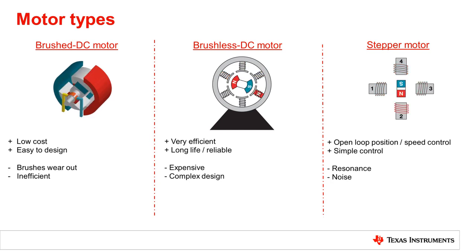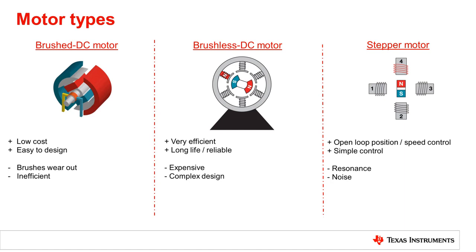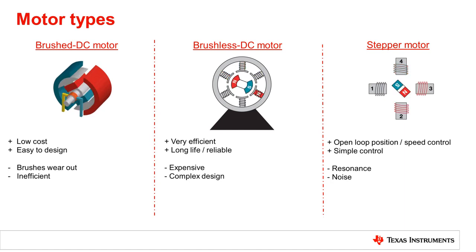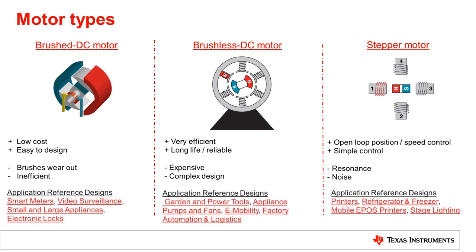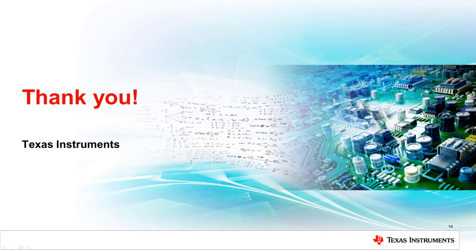With stepper motors, we can use open-loop architecture for speed and position control with no sensors needed, making designing with stepper motors easier compared to brushless DC systems. However, since the current in stepper motors needs to be controlled in order to avoid noise, vibration, and resonance, current regulation is often needed. We recommend taking a look at TI's application reference designs listed here for each motor type. These tools provide a quick and easy way to see how our motor applications can be implemented with our motor drivers and supporting ICs. Thanks for taking time to learn about the motor basics.